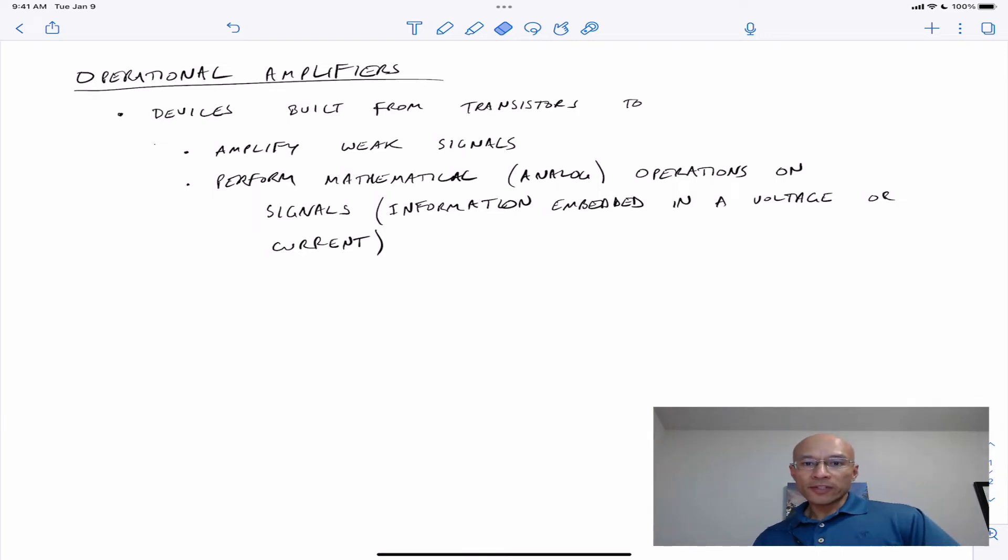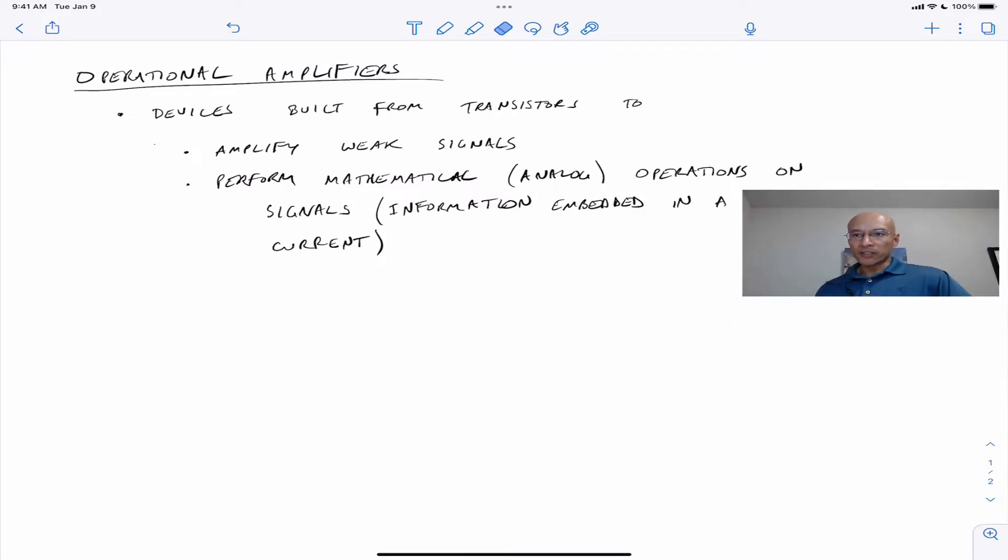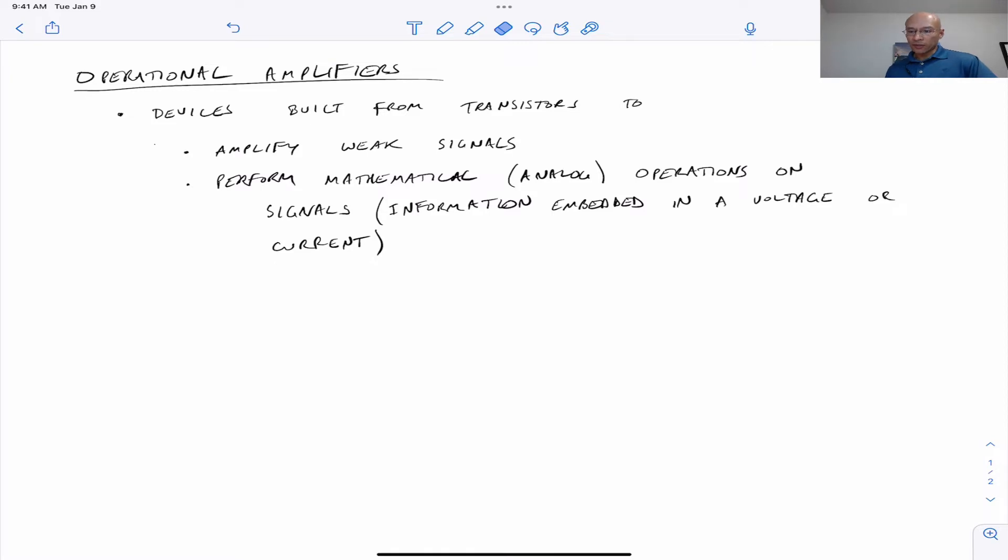In this video I'm going to introduce the concept of operational amplifiers. These are fairly complex devices. They're actually made from transistors and their purpose is to amplify weak signals or perform mathematical operations. So they can be used for analog computing. The idea here is they perform mathematical operations on signals and the signal is a voltage or a current which is used to hold information. So we embed information on this electrical parameter.